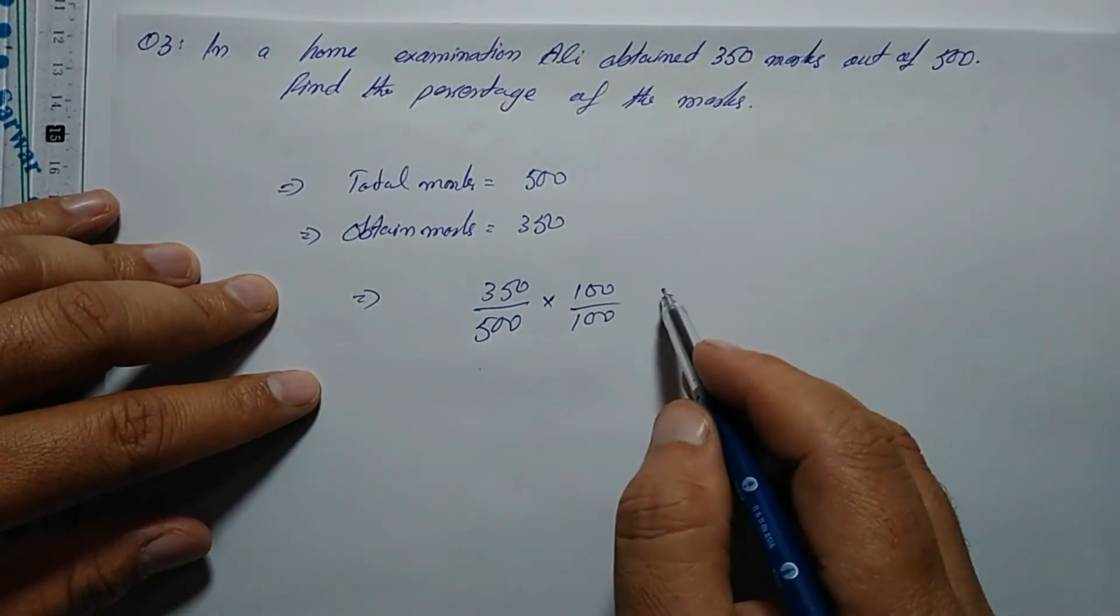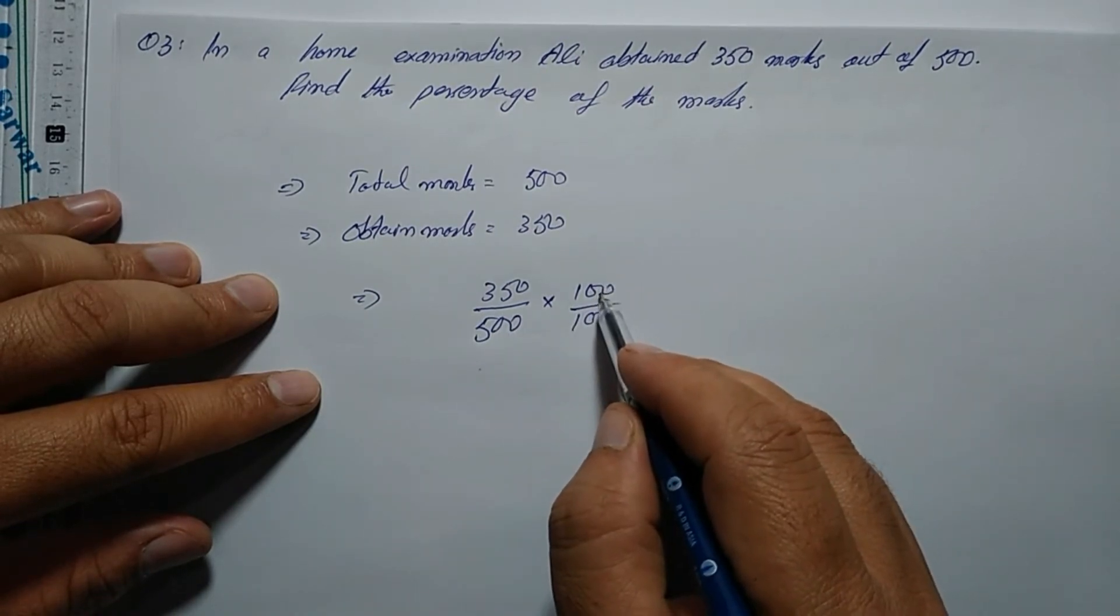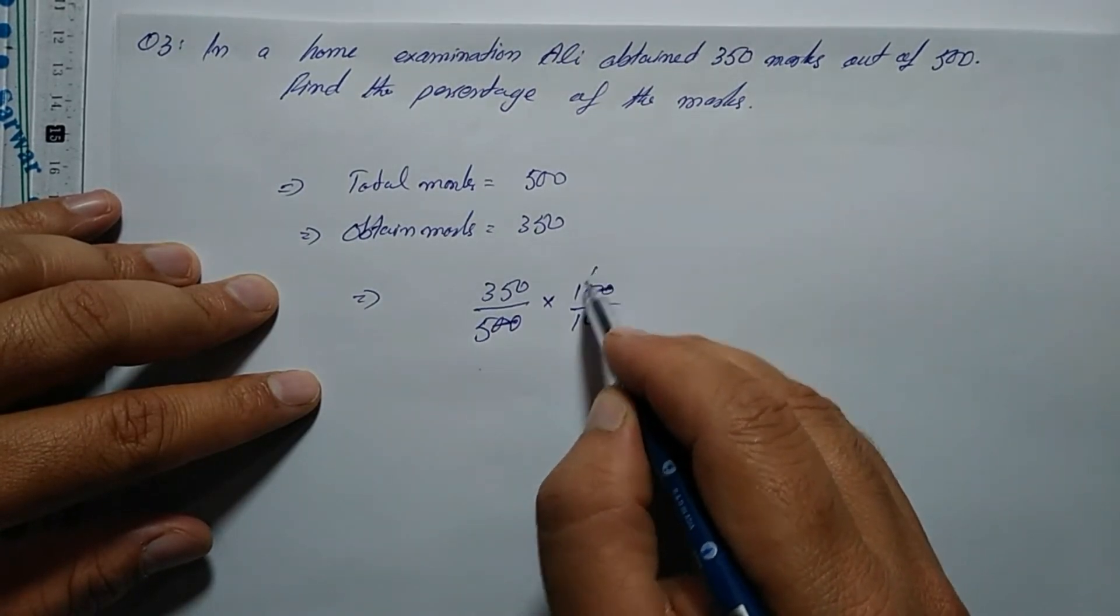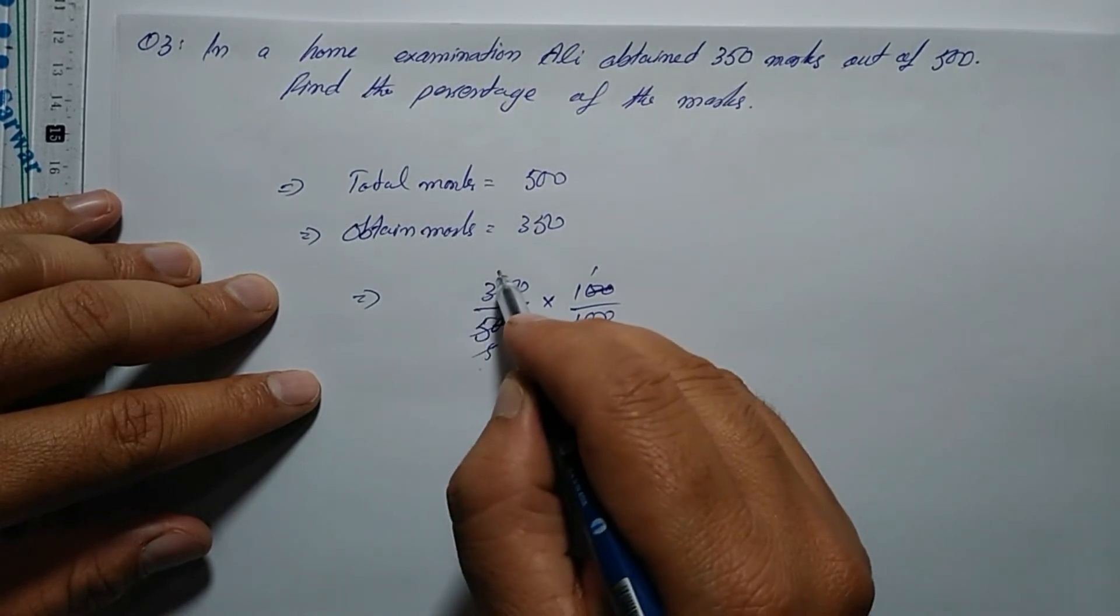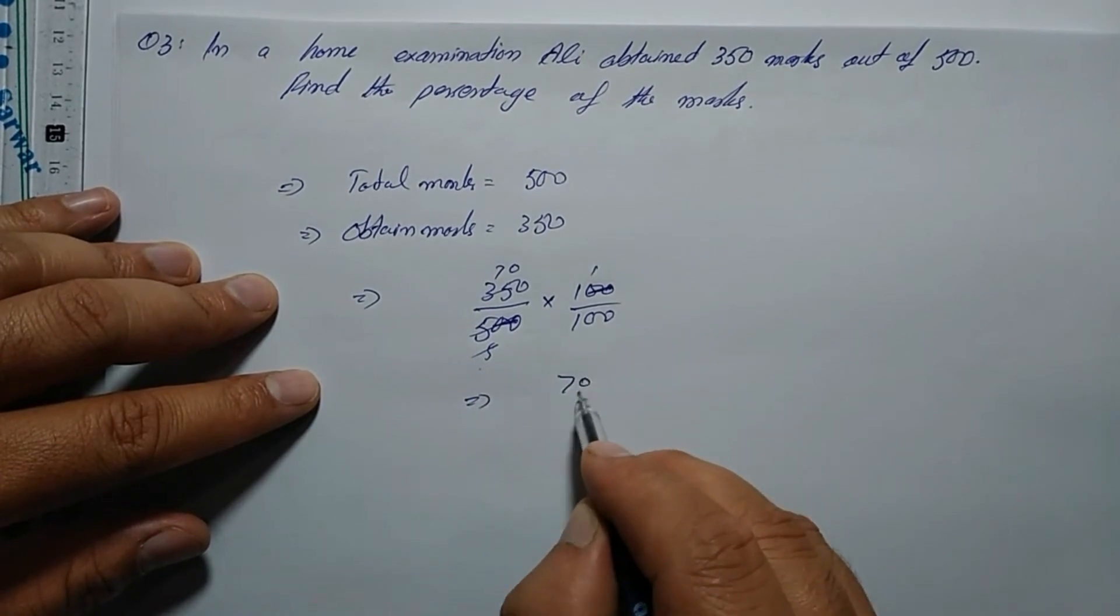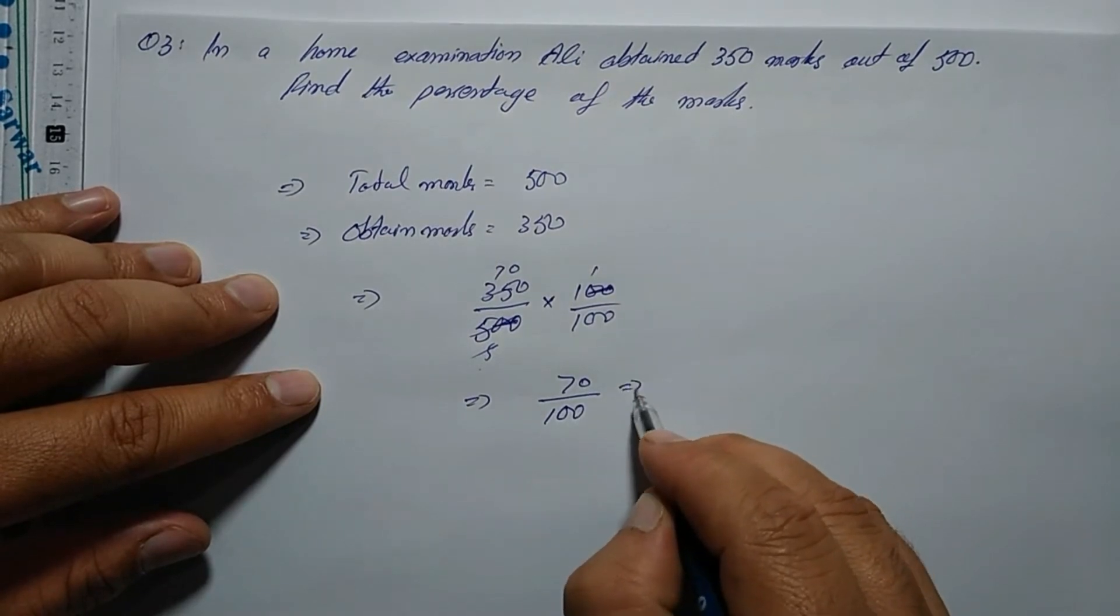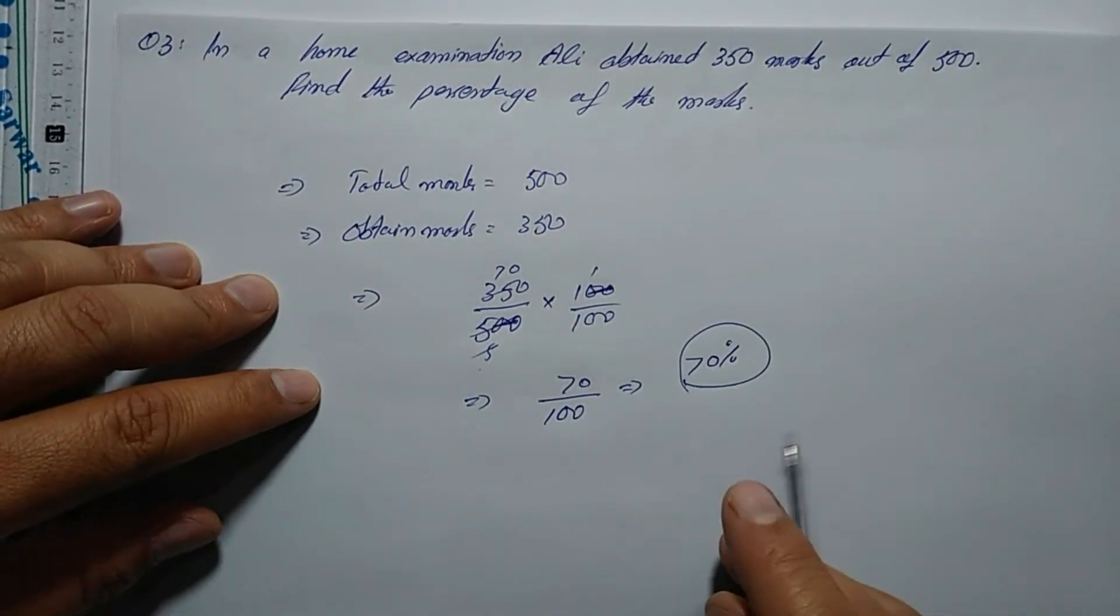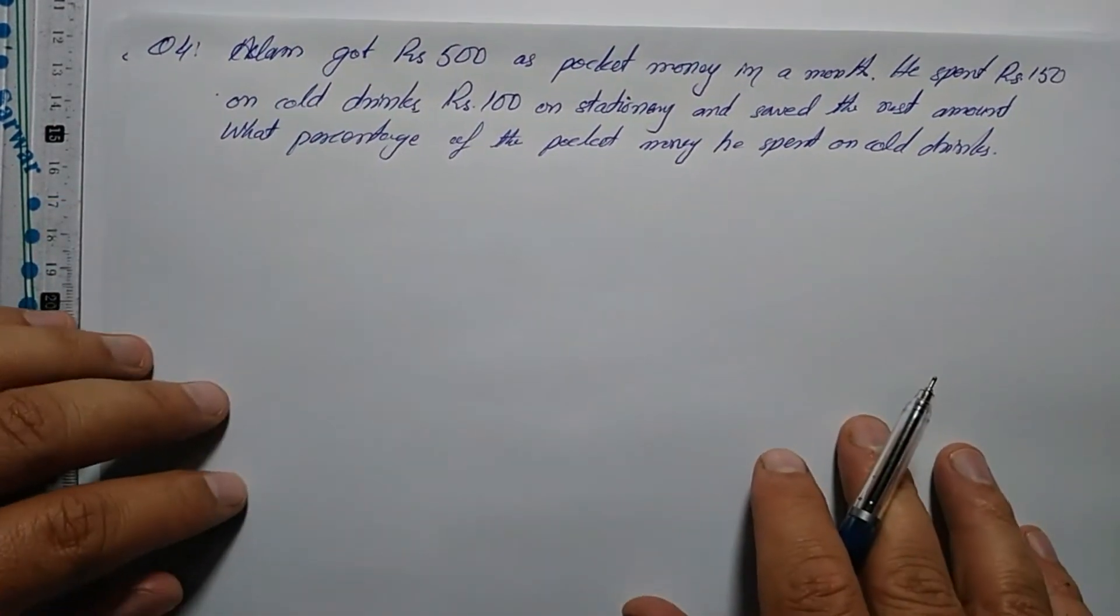We divide numerator and denominator: 100 divides into 100 once, 500 divides by 5 equals 100. Then 35 times 100 gives us 70 over 100, which equals 70 percent marks.